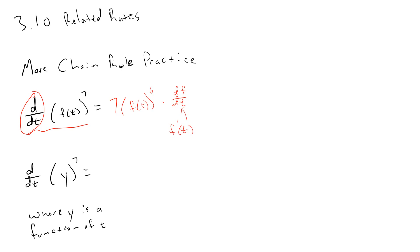The derivative with respect to t of y to the seventh is really no different from the previous example, because y represents some function of t. According to the chain rule, it's seven times y to the sixth power, and then since y is a function of t, we multiply by dy/dt — the derivative of that inside function. This can also be written as y prime.